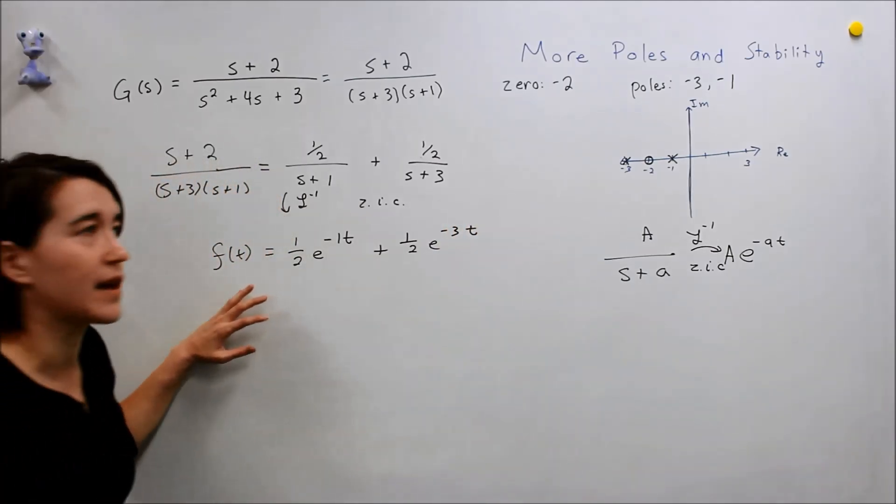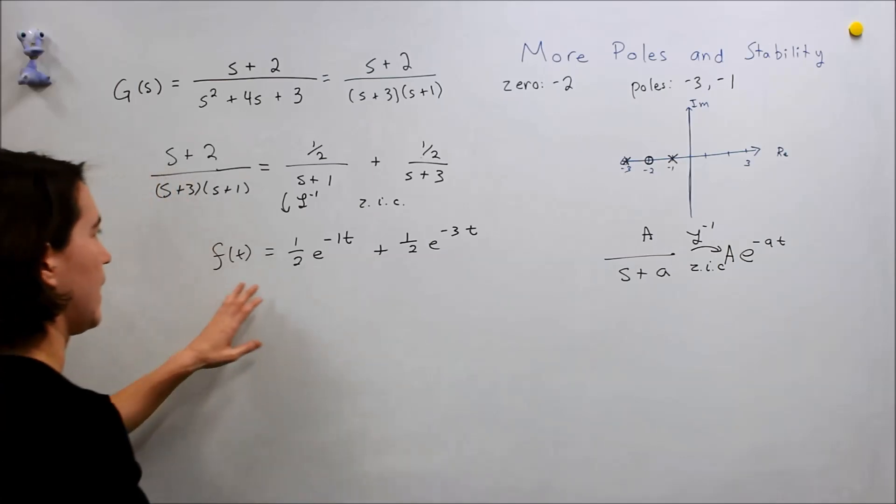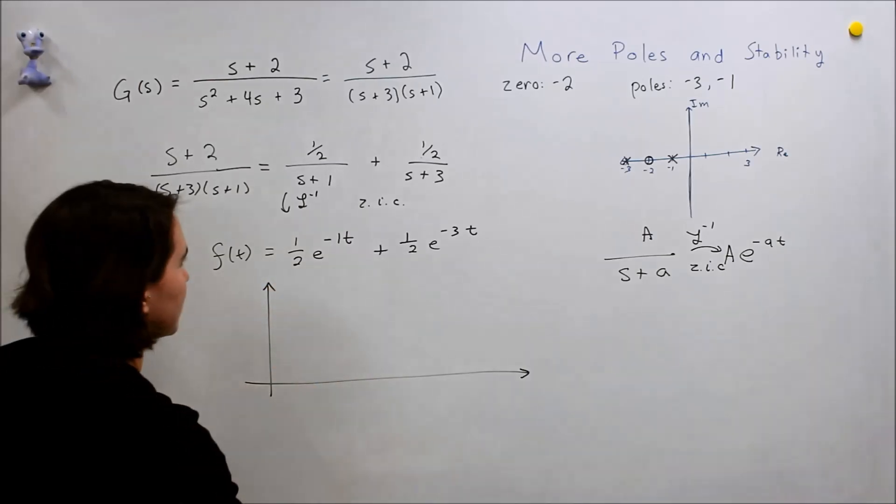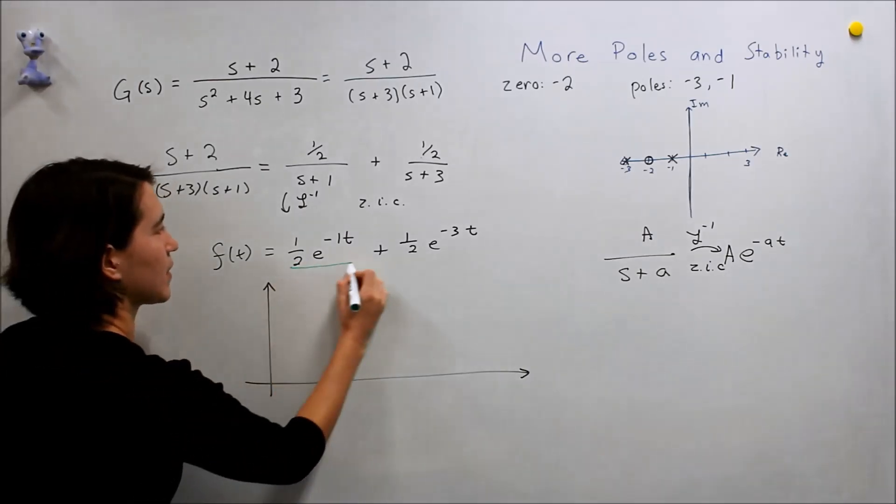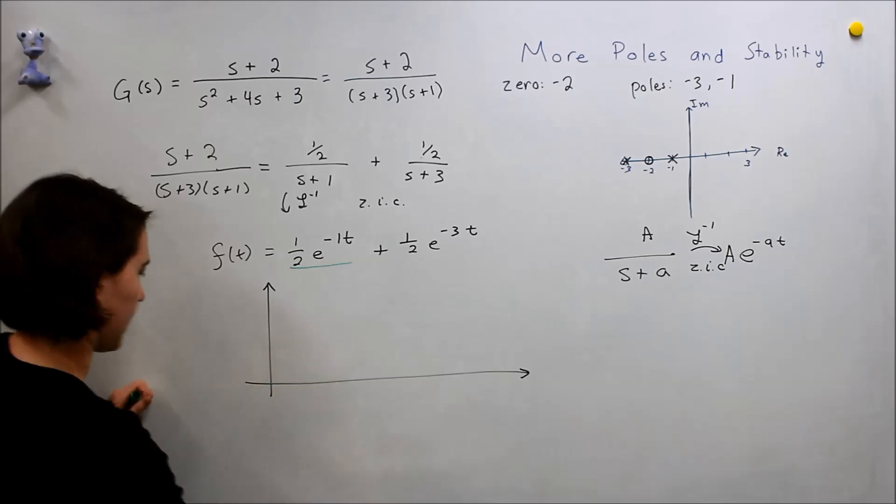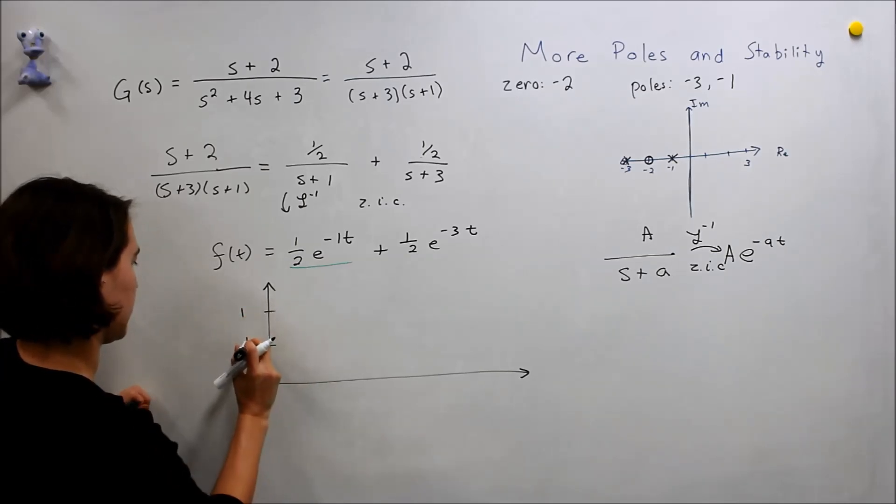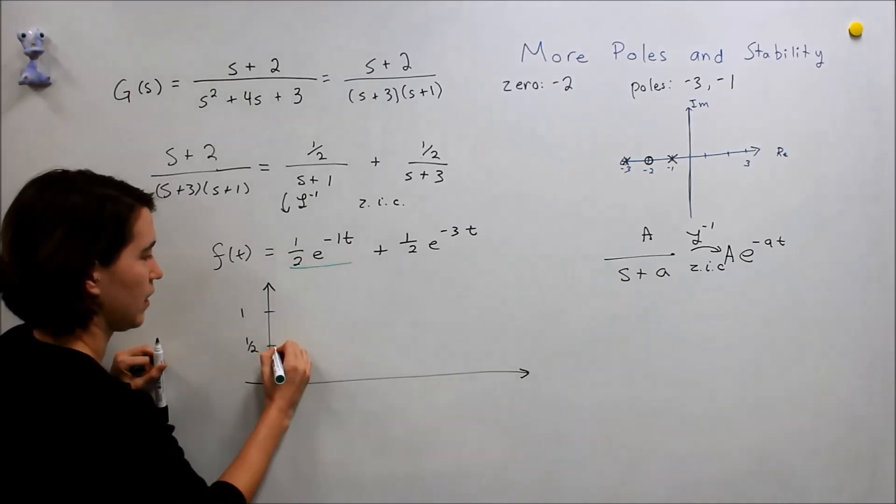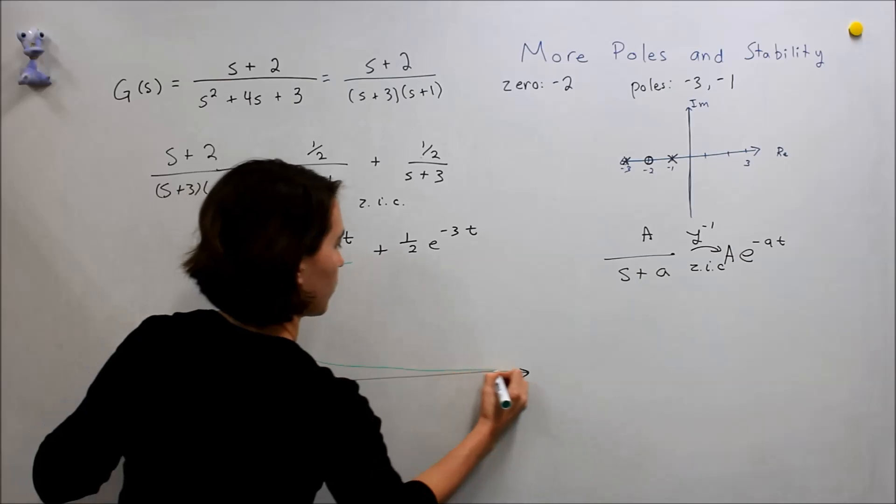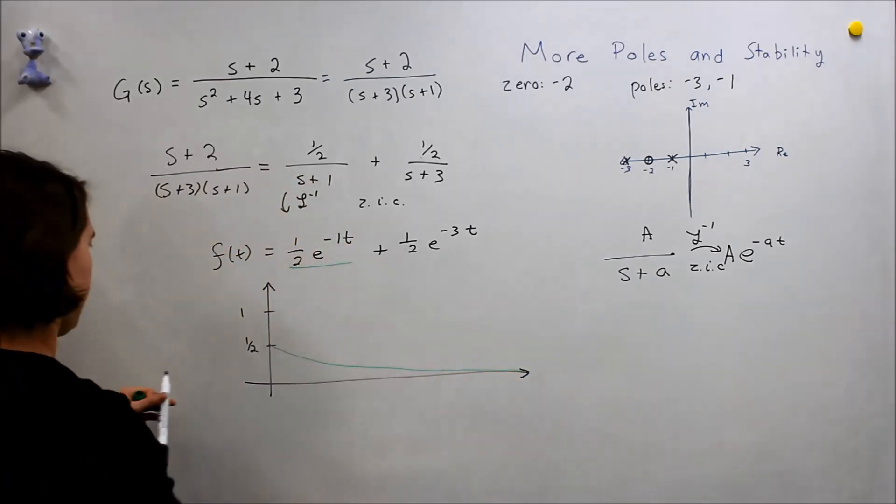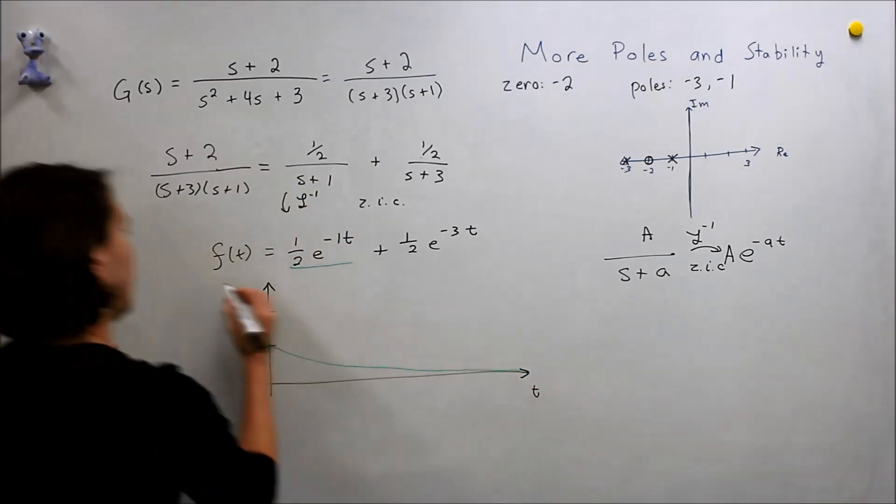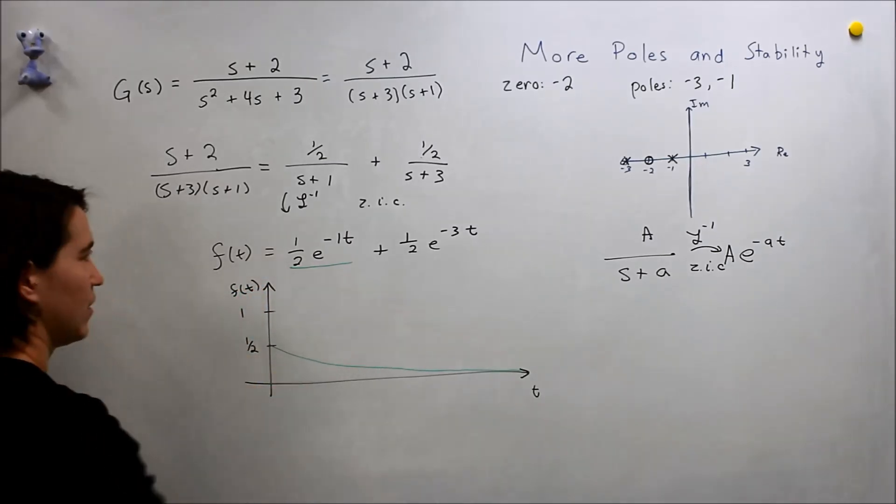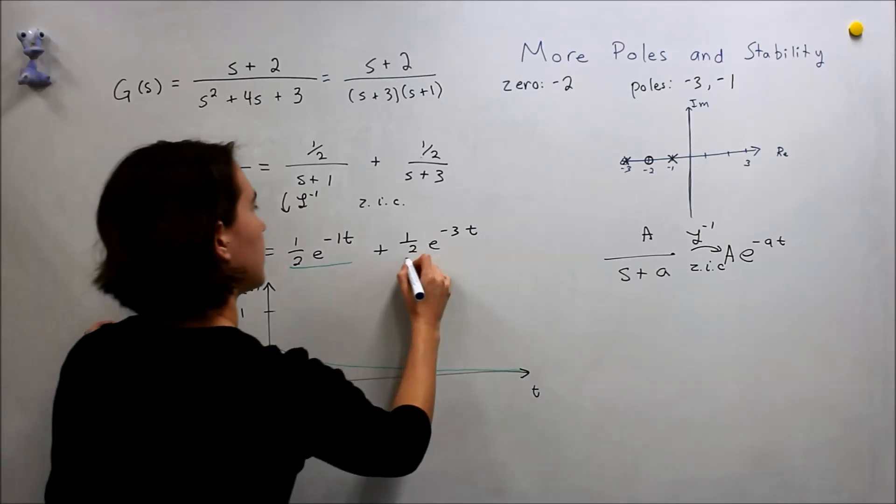This is what our function looks like in the time domain. Just for completeness, if we look at this expression, it would start at, say this is plus 1 half. It would start at 1 half, and then decay exponentially towards zero. Of course this is t and f of t. We'll look at the other one.